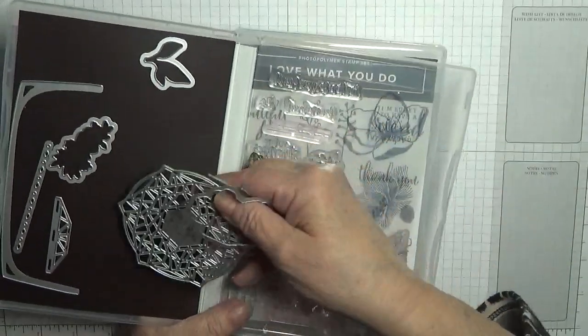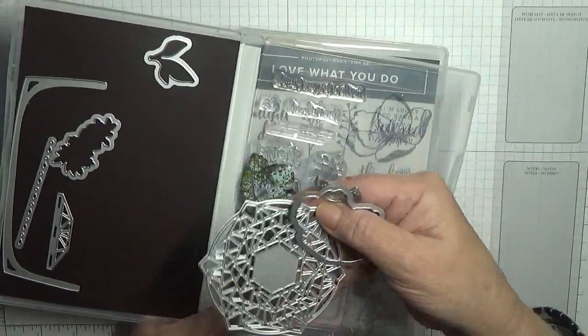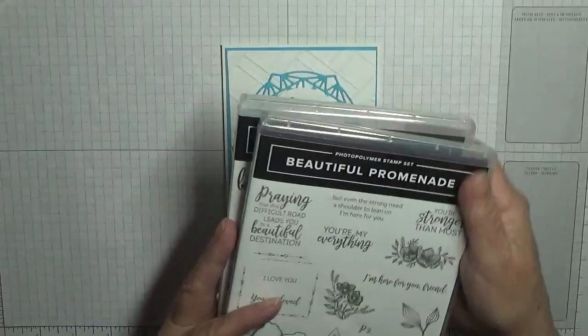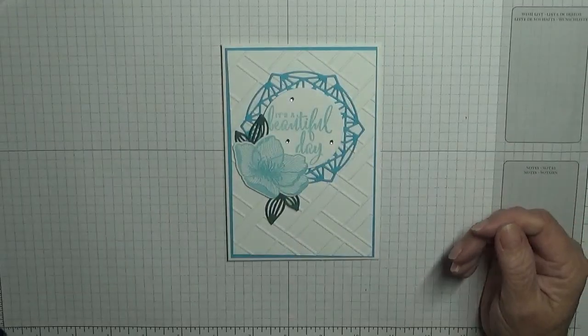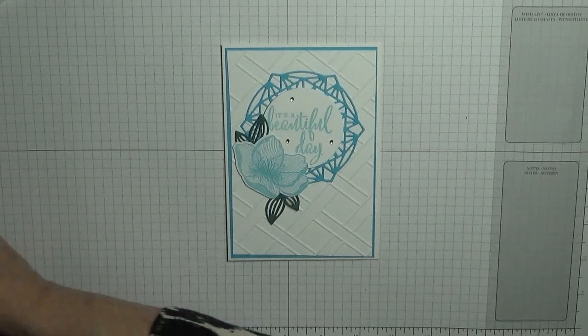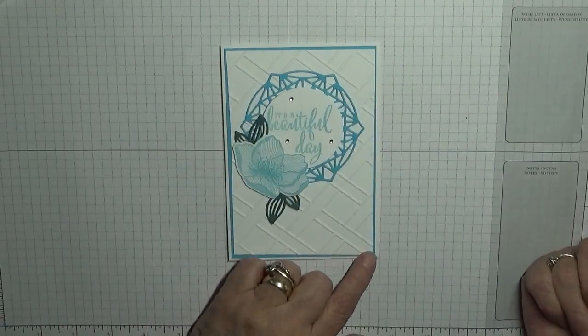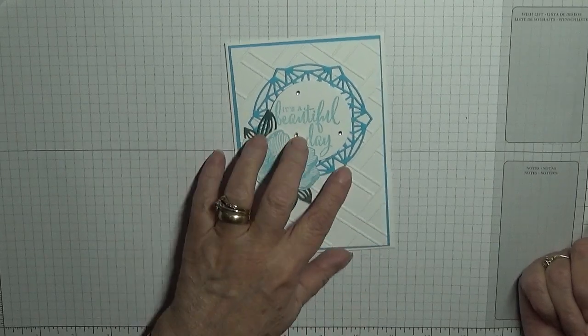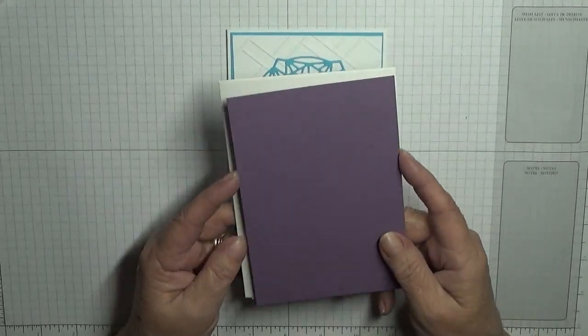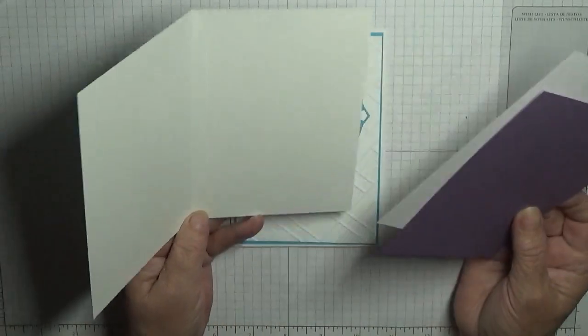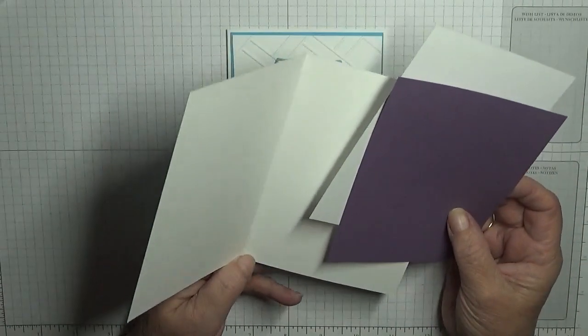Also going to use the dies, I've already taken them out. We're using the doily, the flower and the leaf. For the card itself I've changed the color, this is Tempting Turquoise retired. I am going to use Perfect Plum retired. I've also used a card base of eight and a quarter by five and seven eighths.